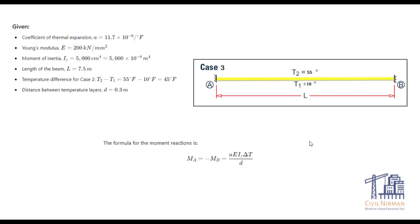As a self-practice exercise, work out Case 3 on your own — it should take only 2 to 3 minutes to model. Consider T1 = 10 degrees and T2 = 55 degrees, with all other values as given. Apply the equations manually and also model it in STAAD, then share your reaction and moment results in the comment box. In the next session, we'll explore how to implement temperature stresses based on country-specific temperature regions.